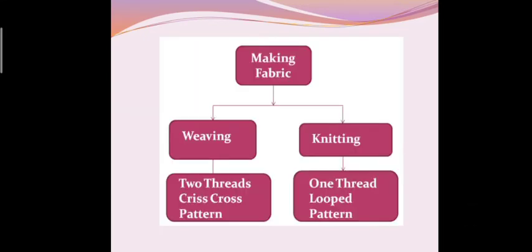This flow chart is clearly showing the two methods of making fabric are weaving and knitting. In weaving criss cross pattern of two threads are present while in knitting only one thread is present in looped pattern.